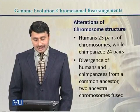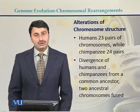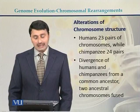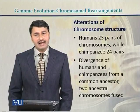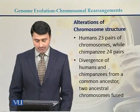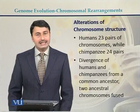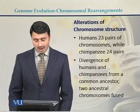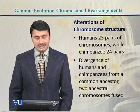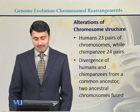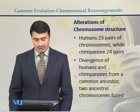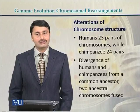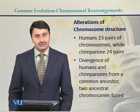Humans have 23 pairs of chromosomes, while chimpanzees have 24 pairs of chromosomes. The divergence of human and chimpanzee from a common ancestor is explained by two ancestral chromosomes fusing to each other.